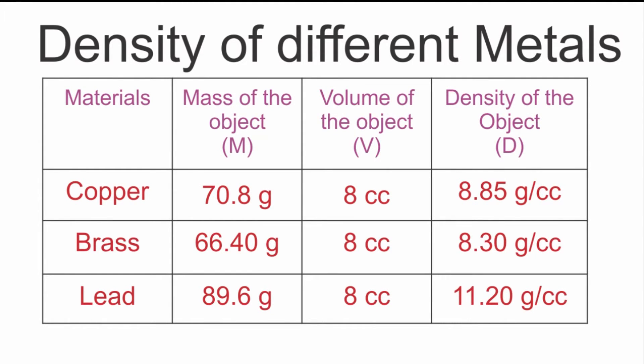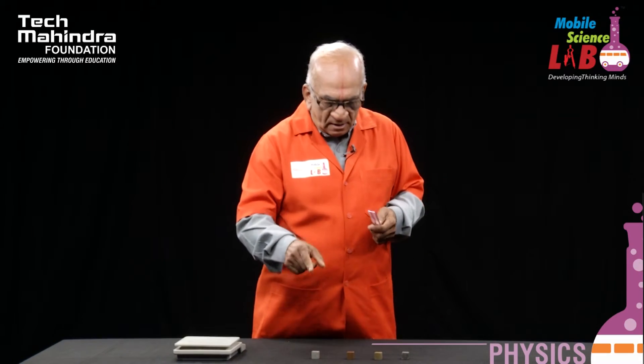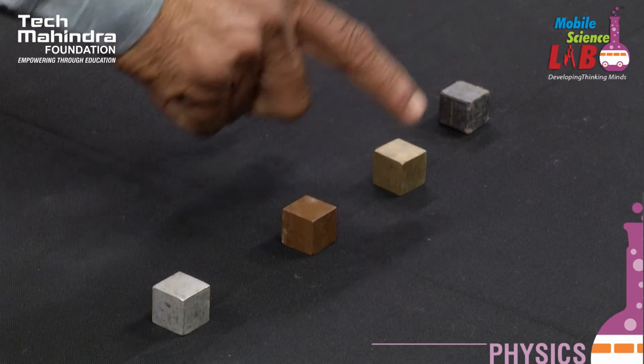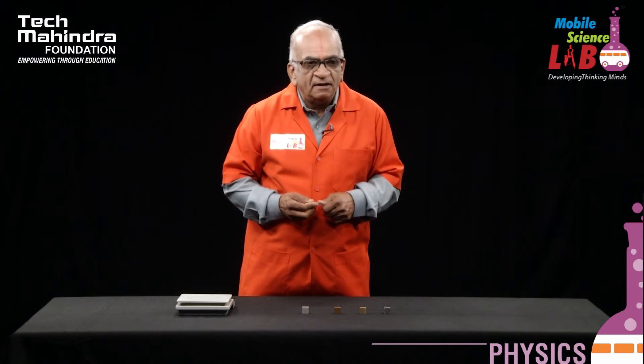The results are tabulated in the tabular column. You would find that the densities of all these materials are different, to prove the famous saying that no two things are identical in nature. Though these are metals, their densities are different. This is what we want to infer.